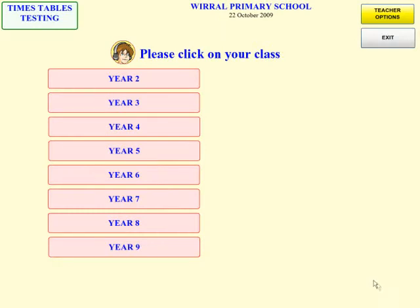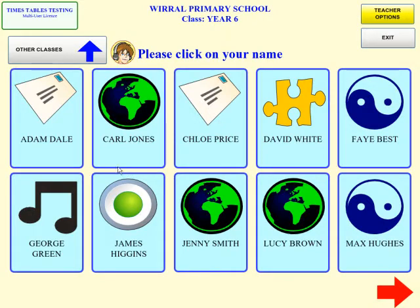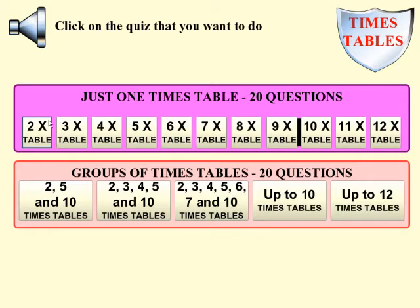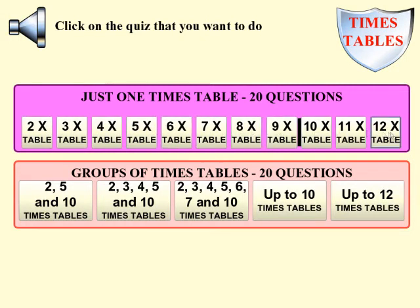First, let's take a look at what a pupil can do with the times tables software. Each day, pupils can click on their class, then their name, and this enables their test scores to be recorded centrally. The software features tests on individual times tables, from the 2 times table to the 12 times table.